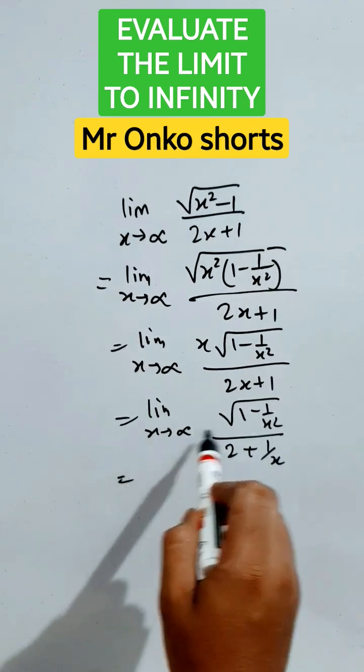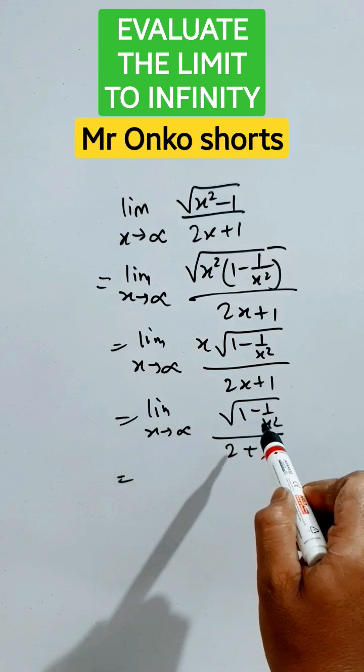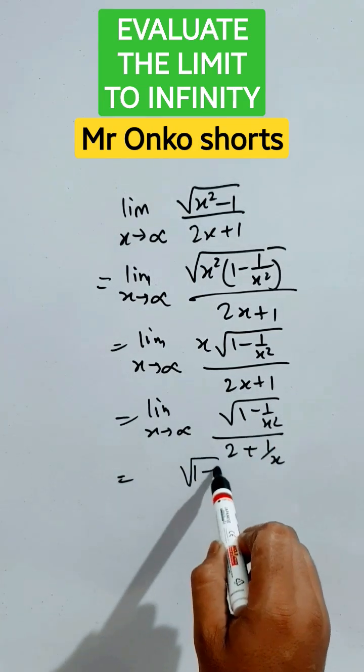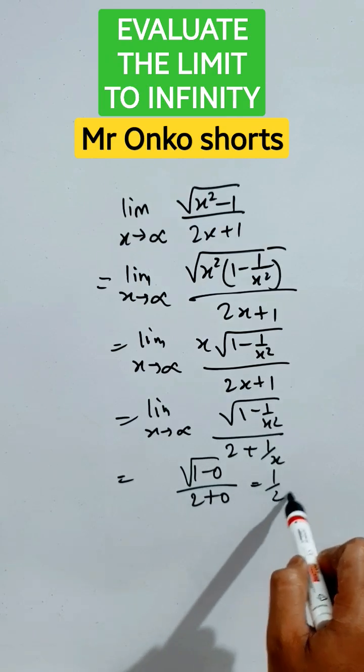We know that since x tends to infinity, if we put x here, then 1 by infinity will be 0. So, it will be root over of 1 minus 0 divided by 2 plus 0. It is 1 by 2.